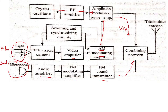The sound signal is amplified and transmitted. Sound and video are both combined in a combining network and then transmitted through the antenna. This is the basic working of a TV transmitter, and based on this, both monochrome (black and white) TV and color TV are derived.